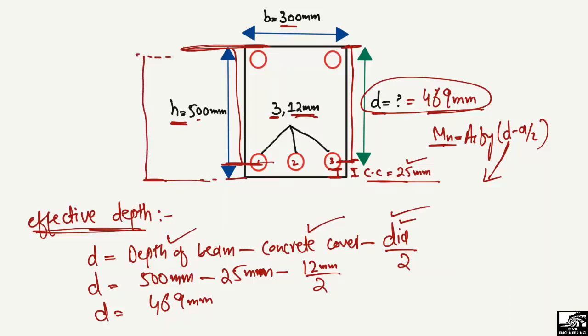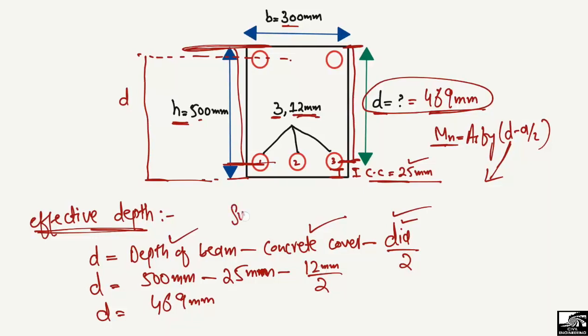It can also be measured from the extreme compression fiber to the mid of the top bars in the case of a different loading condition. This was the overall topic today about the effective depth of the beam. Hope you guys understand what is meant by effective depth and how we can find it out. Don't forget to subscribe to our channel for daily civil engineering videos. Thank you for watching.